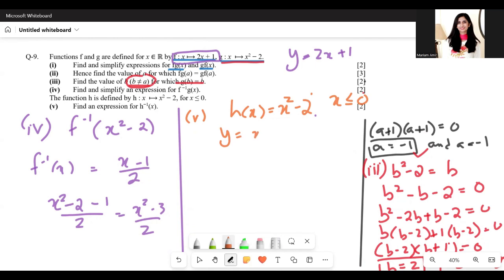So y equals x squared minus 2, y plus 2 equals x squared. Square root both sides. Write plus or minus here. So we have plus or minus square root of (y plus 2) equals x.